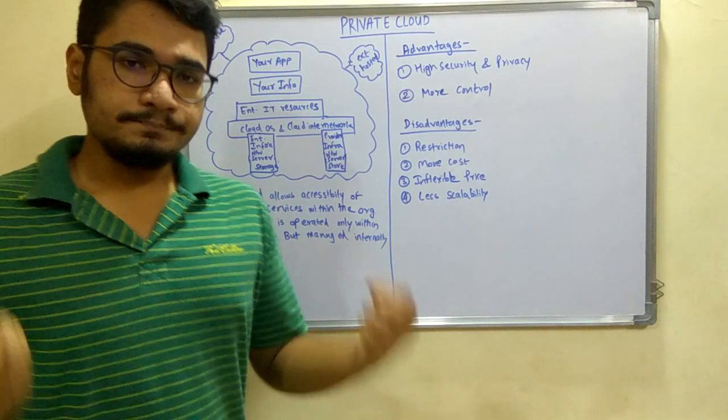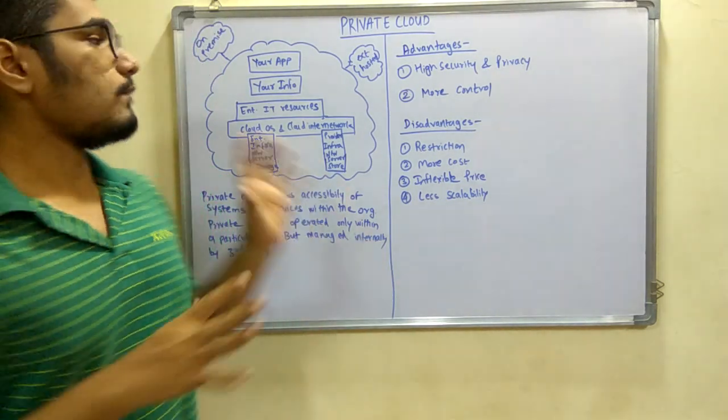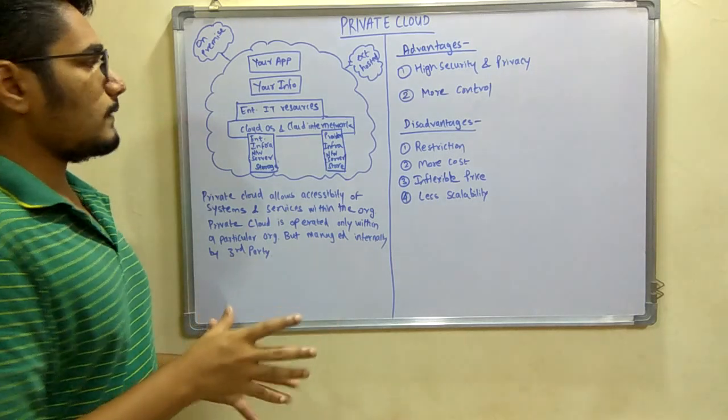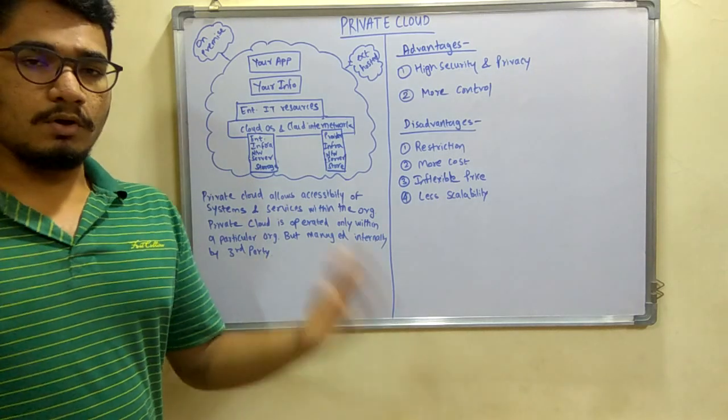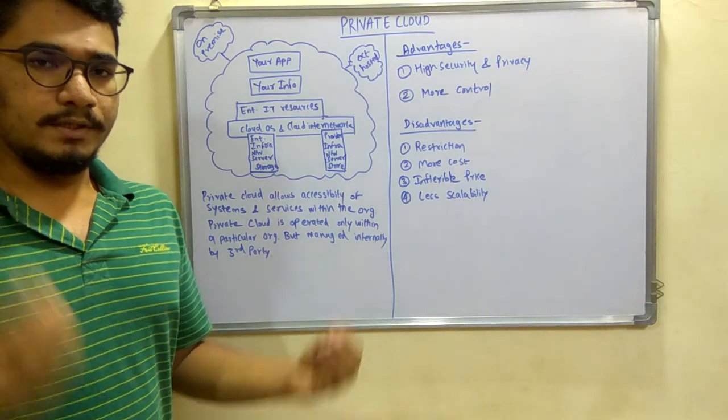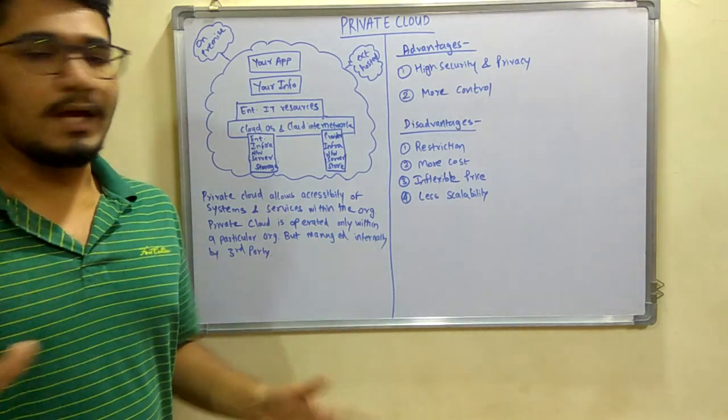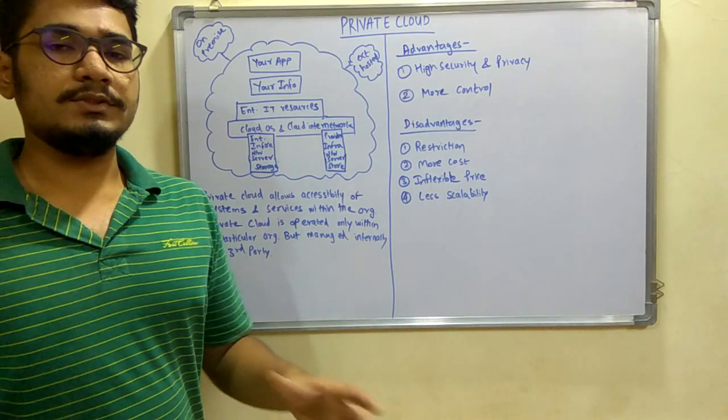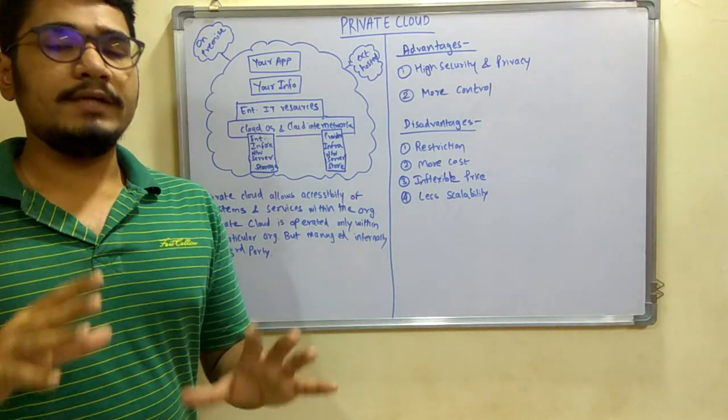Let's understand with the help of this diagram. This is the whole cloud setup in which you have your own app, your information, your details, everything. Then you have your enterprise IT resources including switches, routers, modems, gateways, and everything.